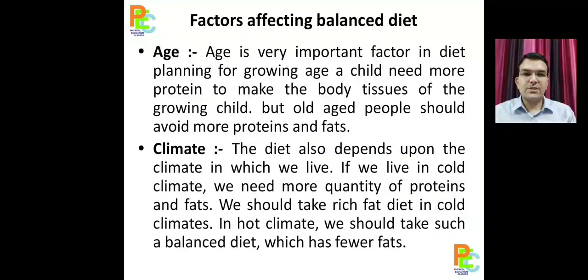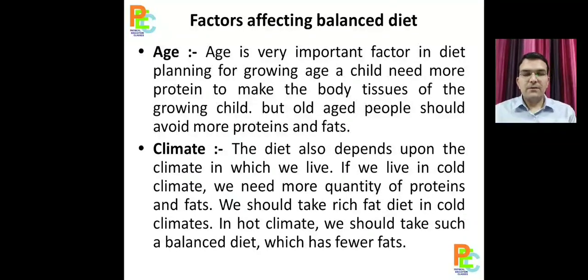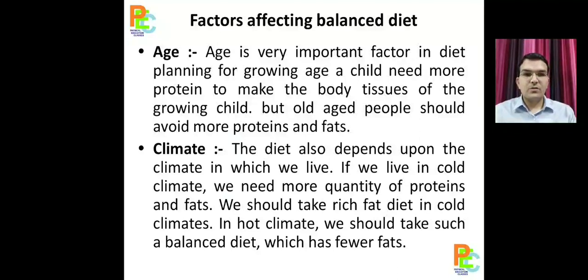There are certain factors on which a diet must be based. We must consider these factors while planning the diet. Number one is age. Diet must be according to the age of an individual. A child of 1 year or 6 months needs more protein because growth is taking place rapidly, whereas older people don't need as much protein. So diet must be based on the age of an individual.